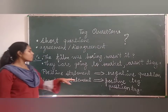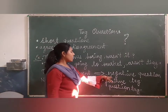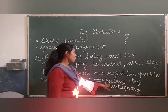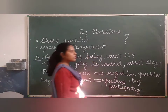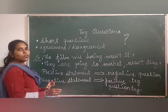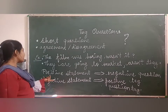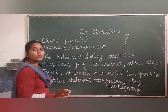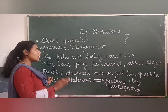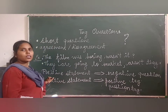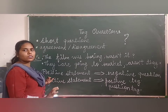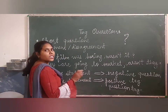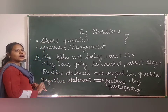We need to remember: a positive statement will always take a negative question tag, and a negative statement will always have a positive question tag. They cannot be the same. If there is a positive statement, the tag will not be positive — that is totally wrong. It will be vice versa. When the statement is positive, the tag will be negative. When the statement is negative, the tag will be positive.